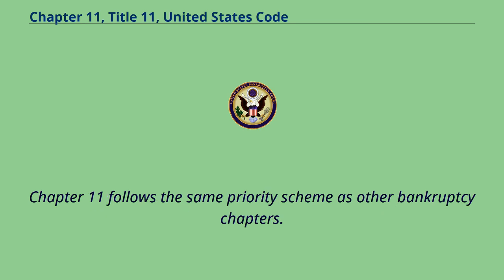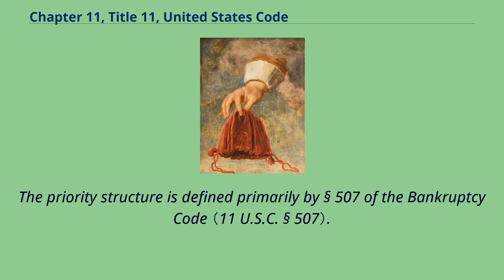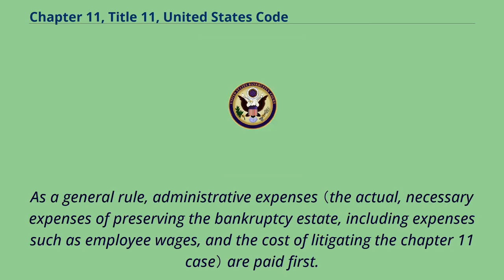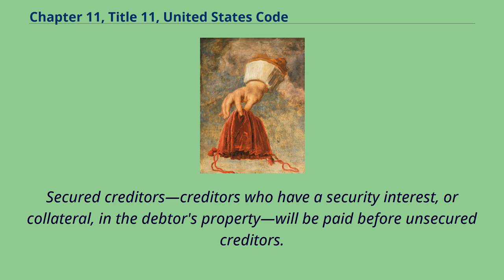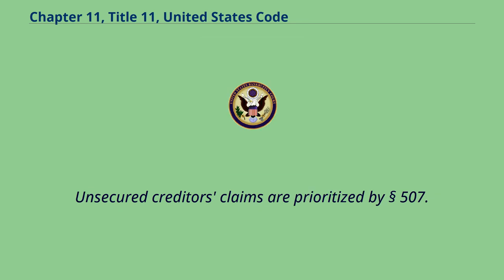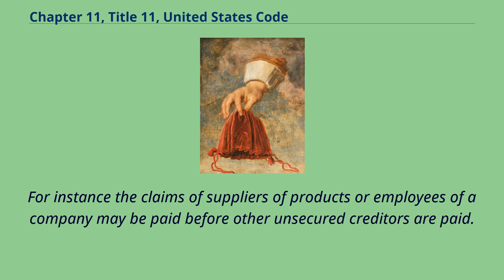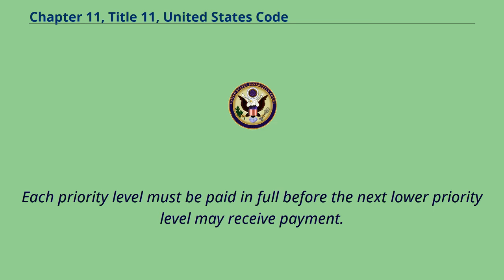Chapter 11 follows the same priority scheme as other bankruptcy chapters, defined primarily by Section 507 of the Bankruptcy Code. As a general rule, administrative expenses are paid first. Secured creditors — creditors who have a security interest or collateral in the debtor's property — will be paid before unsecured creditors. Unsecured creditors' claims are prioritized by Section 507; for instance, claims of suppliers or employees may be paid before other unsecured creditors. Each priority level must be paid in full before the next lower priority level may receive payment.